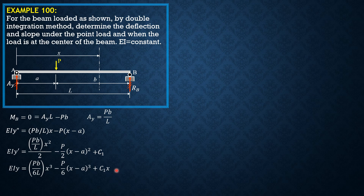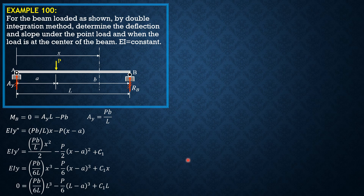When we evaluate C sub 2 after applying the boundary conditions, it will still be zero — remember the interpretation from the derivation of the double integration method. So when X equals L, deflection at B is zero: 0 equals PB over 6L times L cubed, minus P over 6 times the quantity L minus A cubed, plus C sub 1 times L.